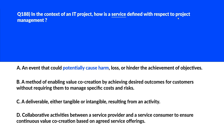How is service defined with respect to project management? Option A says it is an event that could potentially cause harm, loss, or hinder the achievement of objectives — this describes risk, not service, remove it. Option B says it is a method of enabling value co-creation by achieving desired outcomes for customers without requiring them to manage specific costs and risks. A service is defined as a means of enabling value co-creation by achieving outcomes desired by customers without them having to manage cost and risk — this looks good.